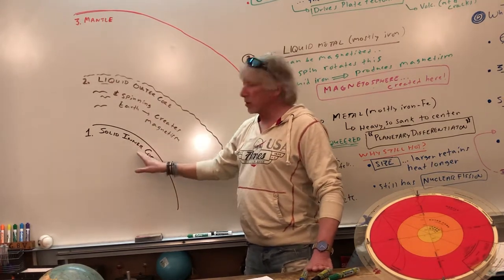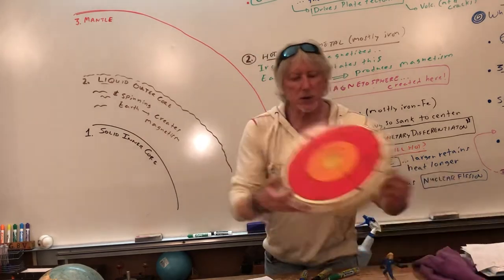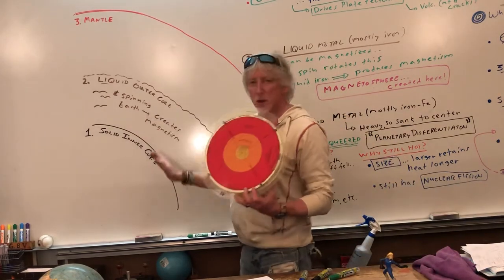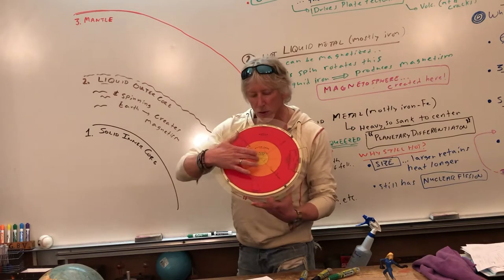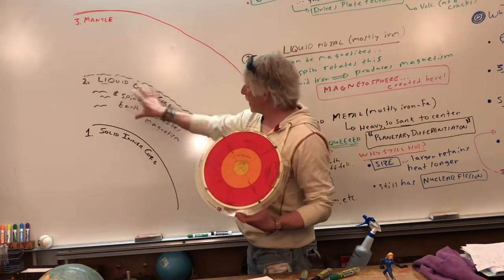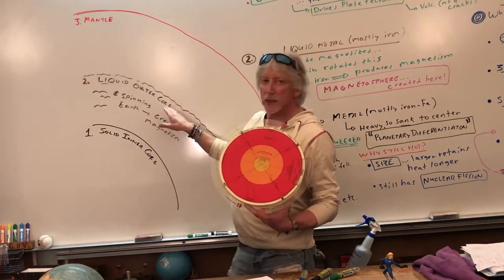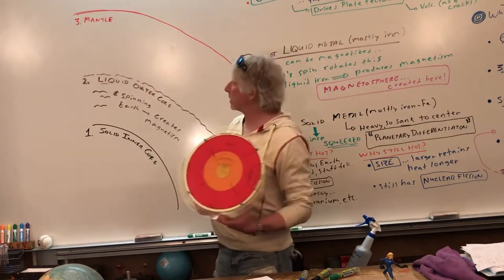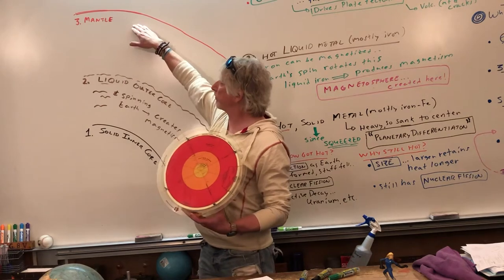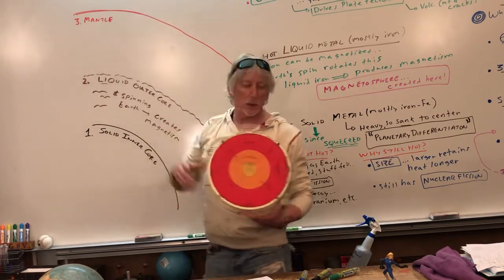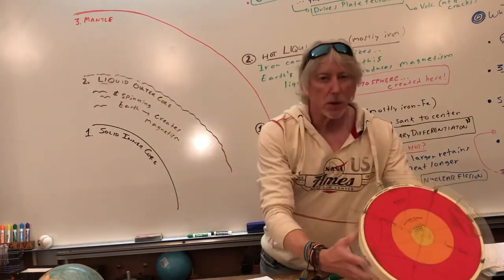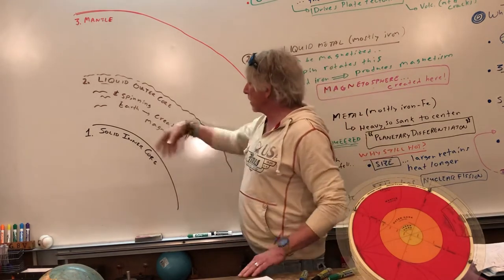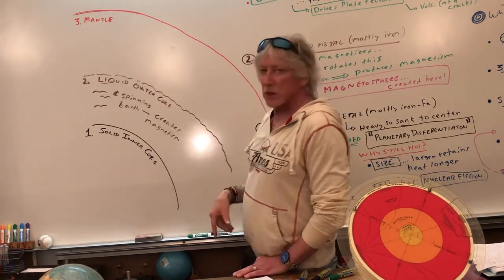Solid inner core, the most inside. Solid liquid outer core. And something called the mantle. And then we'll have the surface and the atmosphere, magnetosphere. Let's talk about what's going on in each of these layers.